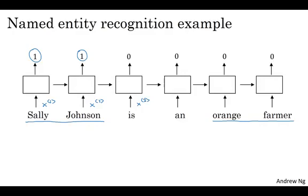then after having trained a model that uses word embeddings as the inputs, if you now see a new input, Robert Lin is an apple farmer, knowing that orange and apple are very similar, will make it easier for your learning algorithm to generalize, to figure out that Robert Lin is also a human, is also a person's name.